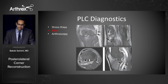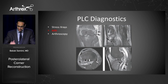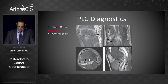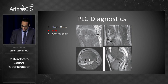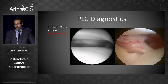MRI is the gold standard. A lot of facilities don't have a good MSK radiologist — at least in Los Angeles — so you have to learn to analyze these yourself. In the top left picture you can see the fibular collateral ligament tear. In the top right picture you can see the popliteofibular ligament tear. Always look at the popliteus tendon — you can see the edema in the lower right and lower left images.